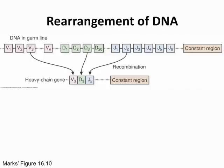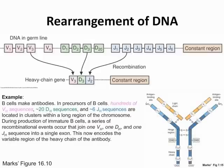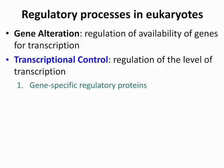Gene rearrangement means segments of DNA can move from one location to another by recombination. The example shown is an antibody with different regions: the V gene, D gene, and J gene. All these sequences can undergo recombination and combine to make new DNA. After covering all five aspects of gene alteration, the next topic is transcriptional control.